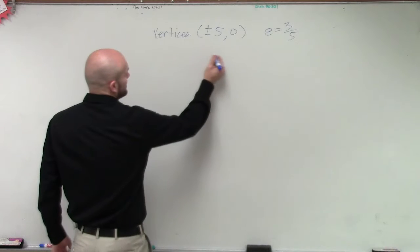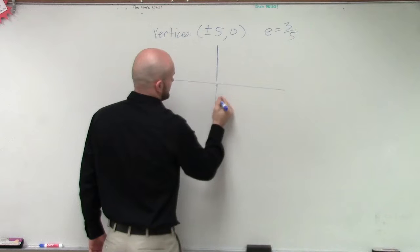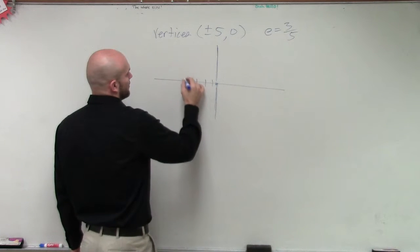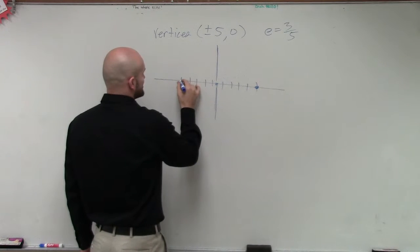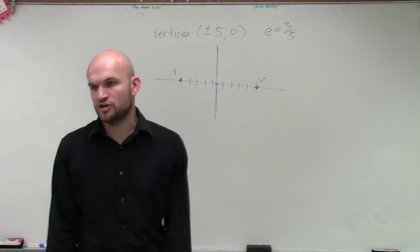So what I'm going to first do here is let's graph what we know. So in this equation I have 1, 2, 3, 4, 5, 1, 2, 3, 4, or 5. Those are my two vertices. I don't know what the center is, I just have those as my two vertices.